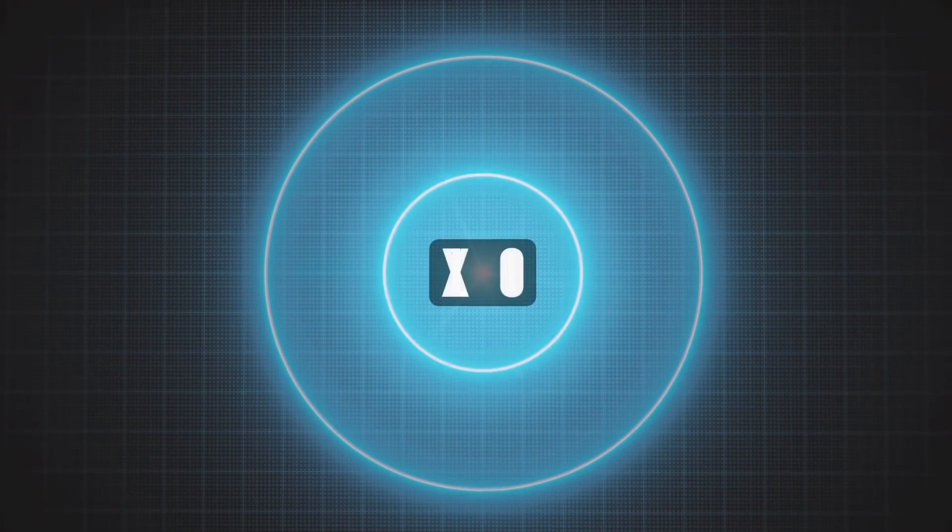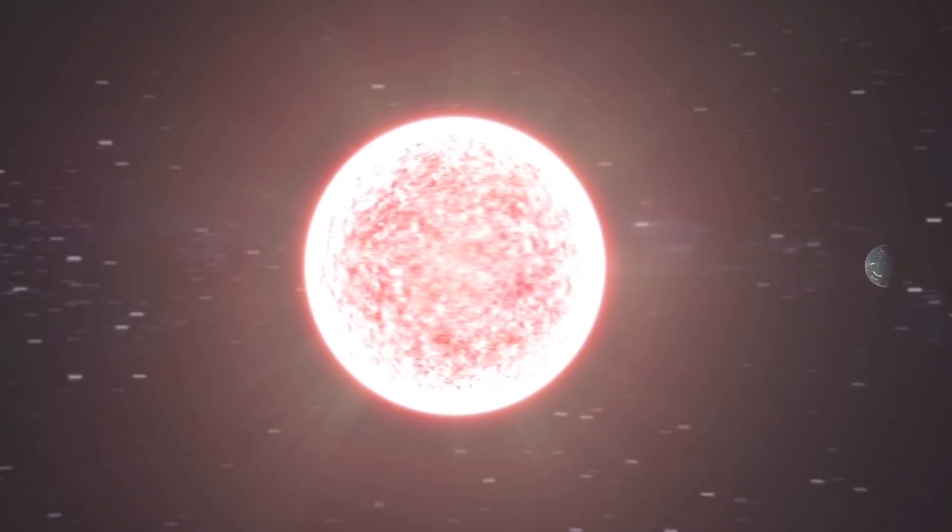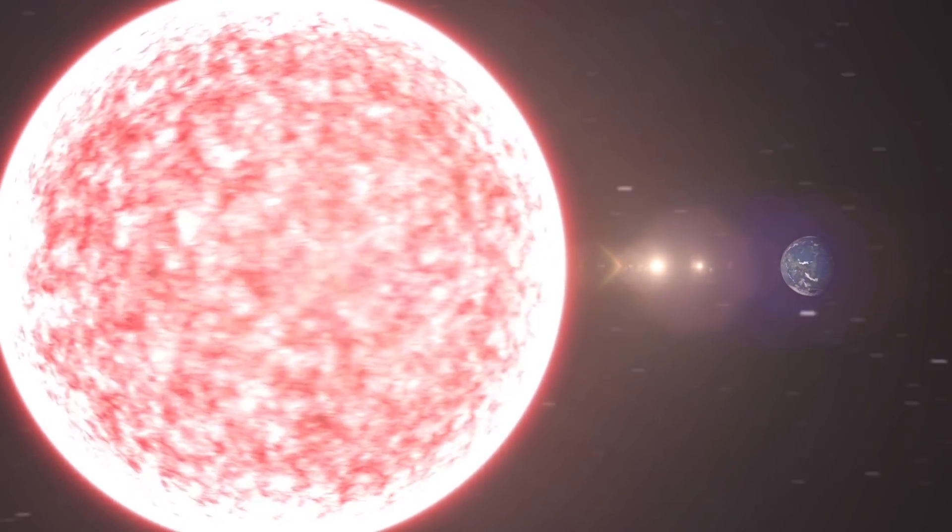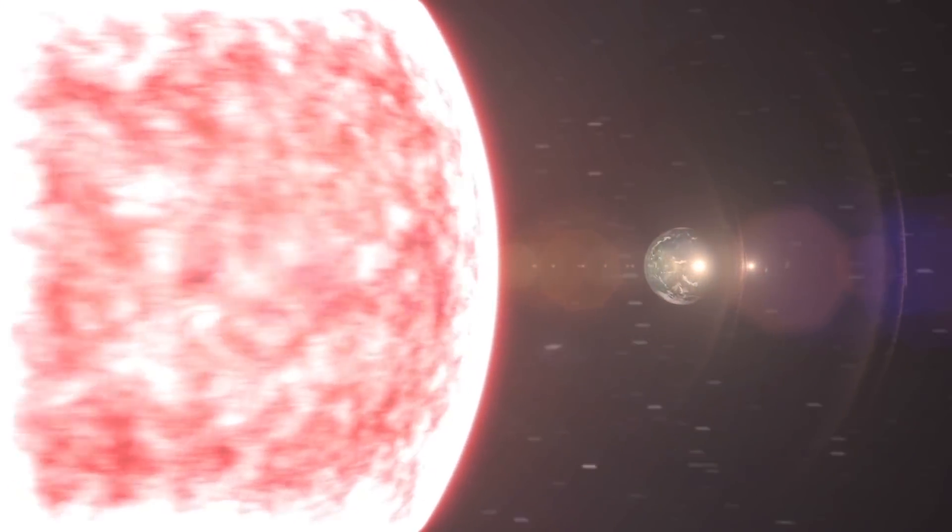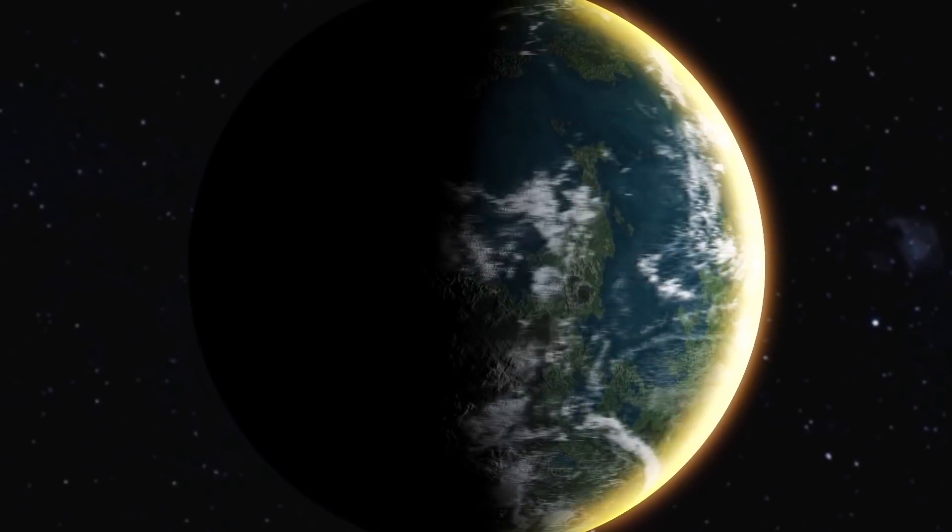Besides, Proxima b is 20 times closer to its star than Earth is to our Sun. This proximity might lead to one side of the exoplanet being always turned towards its star, just like the Moon is to the Earth. That's why half the planet might be hot and the other half icy.